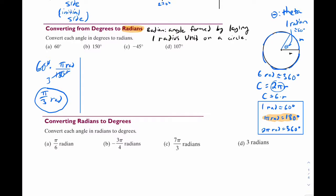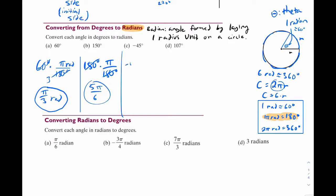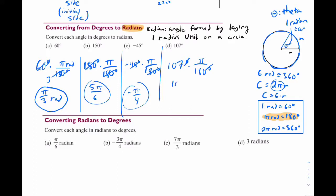Next example: 150. Multiply by π over 180 and reduce everything by 30 — that's going to be 5π over 6. For negative 45, multiply by π over 180 and reduce — that's negative π over 4. And this last one looks really hard, but you'll realize that nothing reduces. So just cross out your degrees and you're done: 107π over 180.